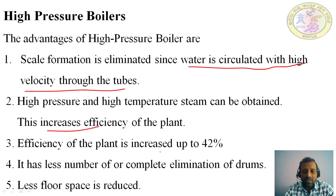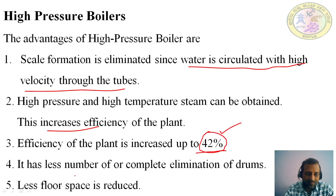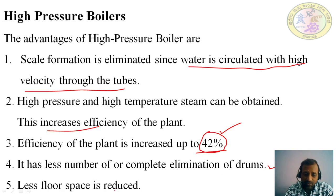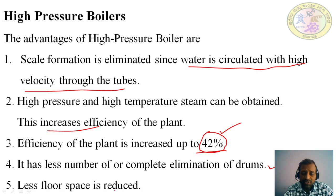The efficiency of the plant is increased up to 42% compared to low pressure boilers. There is also less number of drums or complete elimination of drums. Whenever steam is generated directly, you can use it immediately for your applications — such fast steam generation means you do not need to store steam in a drum, so the drum can be eliminated in high pressure boilers.